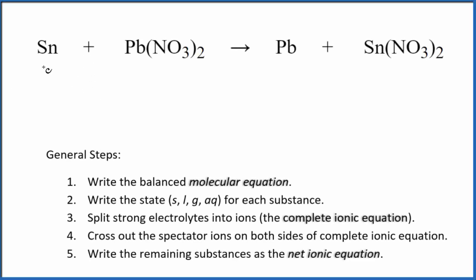Let's write the balanced net ionic equation for tin plus lead(II) nitrate. This is a single displacement reaction where the tin displaces the lead. We have lead by itself and we get tin nitrate.